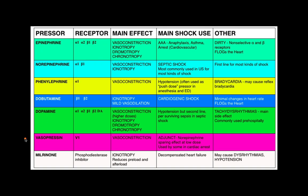The next pressor to focus on is usually my second-line choice: vasopressin. This acts on V1 receptors, causing vasoconstriction. It's a nice adjunct to norepinephrine — as norepinephrine doses get higher, adding vasopressin can prevent the need for so much norepinephrine. It's almost a type of hormonal resuscitation, because hypotensive patients can rapidly exhaust their physiologic stores of vasopressin.